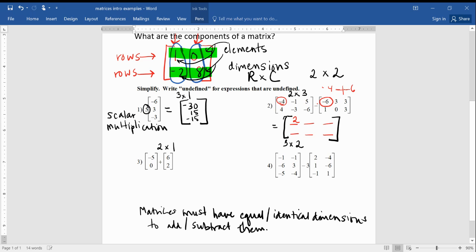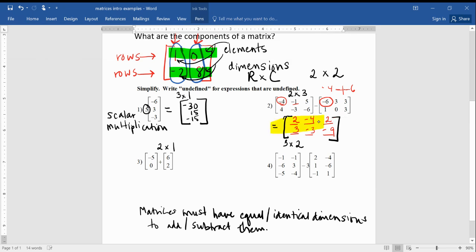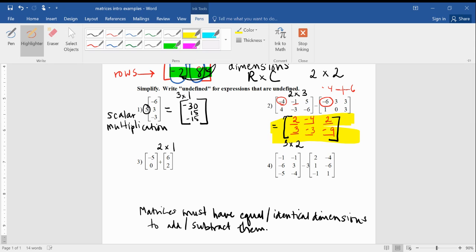And 5 minus 3 is 2, so I'm just subtracting corresponding elements. 4 minus 1 is 3, negative 3 minus 0 is negative 3, and lastly negative 6 minus 3 is negative 9. So that right there would be your answer for that matrix subtraction question.